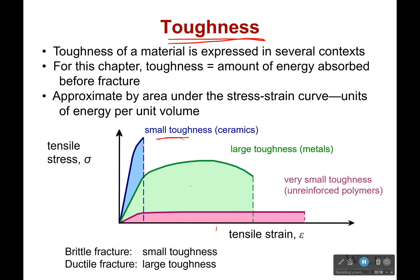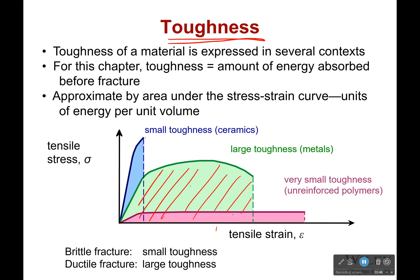The toughness of ceramics or steels would be a little bit less than that, because steel is going to fail earlier than aluminum when it comes to strain. It also has a much higher yield stress, so you'll gain something there. But all in all, what we're really seeing is that toughness is the amount of energy that a material can absorb before failure. That's super important, especially if you take Solid Mechanics later.